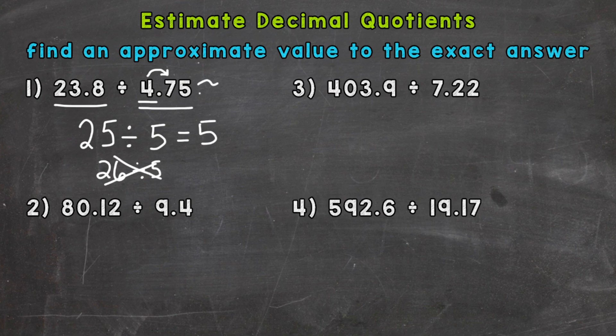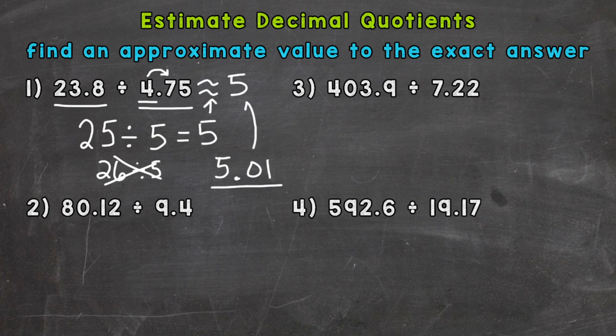So our estimation is 5. The squiggly equal sign means an approximate answer, representing our estimation — we don't use a regular equal sign because the problem doesn't necessarily equal exactly 5. The exact answer to number one is a very long decimal, so I rounded it to the hundredths place. Our estimation is very close to that exact answer, showing how estimation gives us a good approximate value. On to number two: 80.12 divided by 9.4.